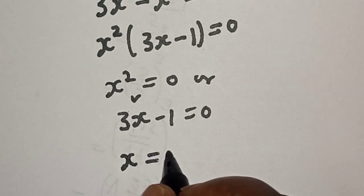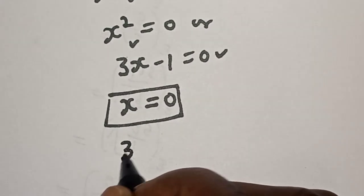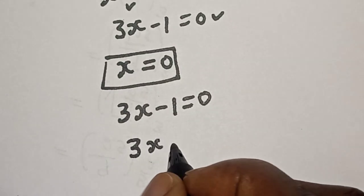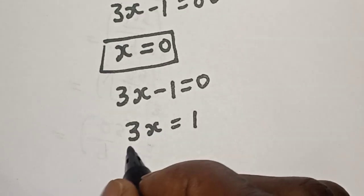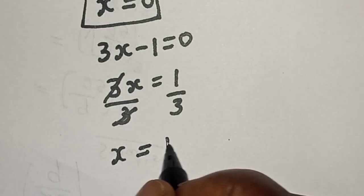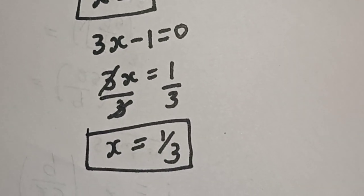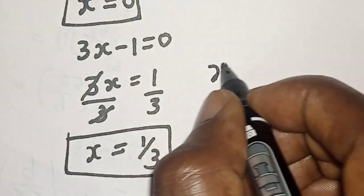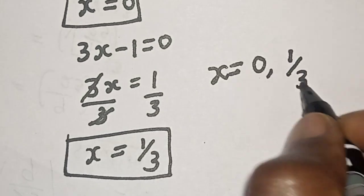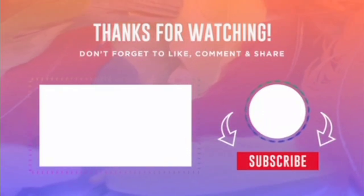From the first factor, s is equal to 0. From the second factor, 3s minus 1 equals 0, so 3s equals 1. Dividing both sides by 3, s is equal to 1 over 3. So our final answers are s is equal to 0 and s is equal to 1 over 3. If you enjoyed the class, please don't forget to like, share, comment and subscribe — thank you!